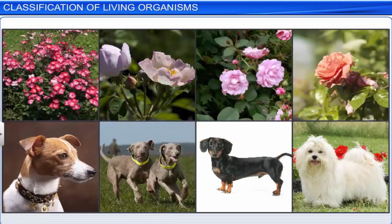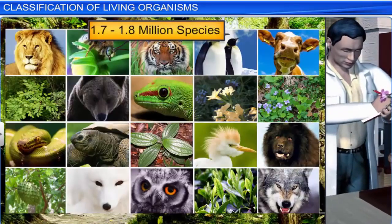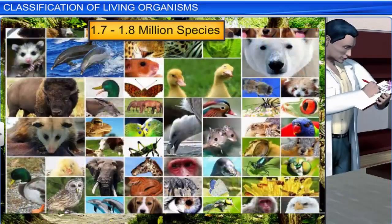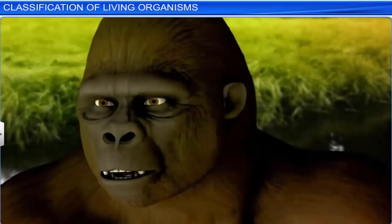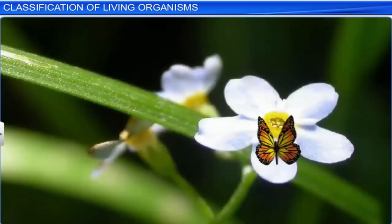In other words, a species is a group of similar individuals sharing a common gene pool and interbreeding freely, producing fertile progeny. Today, there are about 1.7 to 1.8 million species known to us, and this number is ever increasing as we explore new areas along with the old ones. The number and types of living organisms on the earth is referred to as biodiversity.